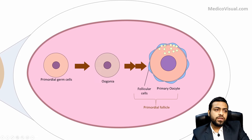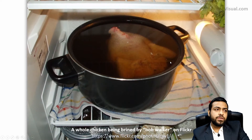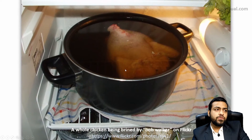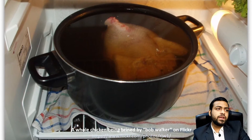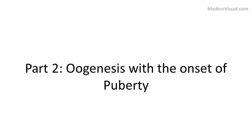Follicular cells release certain factors called oocyte maturation inhibitors that keep this oocyte arrested in meiosis 1. This process reminds me of Asian mothers who start preparing food before a guest arrives — they make the food half done, and when the guest arrives, they complete the cooking. That is what the ovary is doing: before the baby is born, the ovary starts the process of oogenesis.